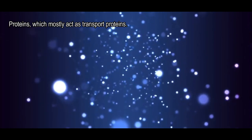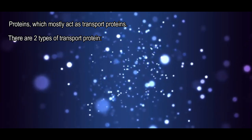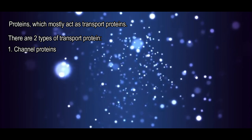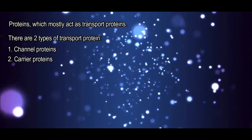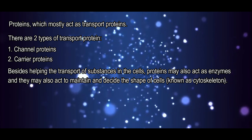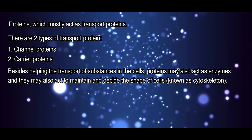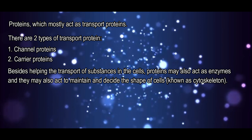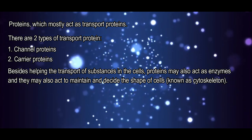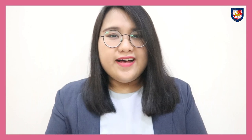Proteins in the cell mostly act as transport proteins. There are two types of transport proteins: first, channel proteins; second, carrier proteins. Without helping in the transport of substances in the cell, proteins may also act as enzymes and may also act to maintain and decide the shape of the cell, known as the cytoskeleton. I think that's all about our lesson today. Don't forget to do the SSS on the order. Bye!